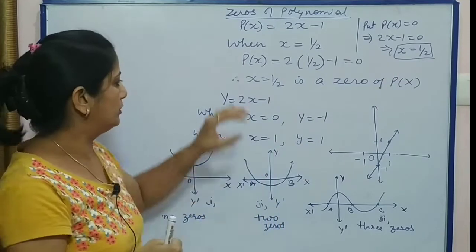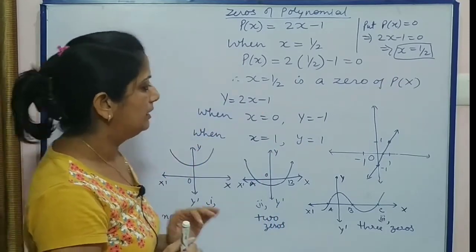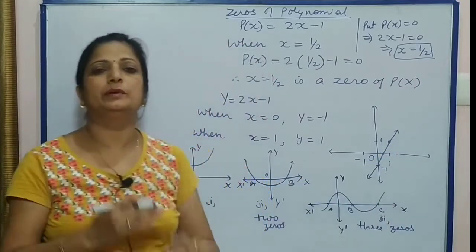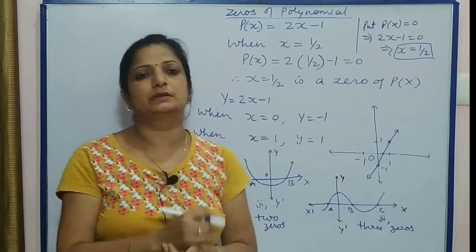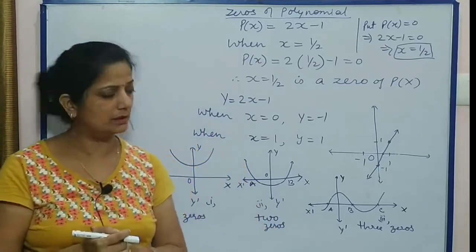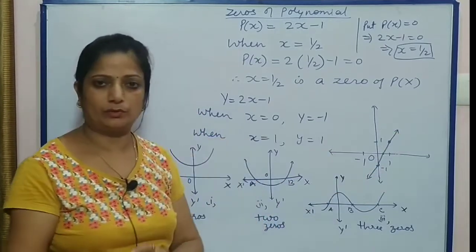When we draw the graph of this polynomial, we will get a simple line. Linear ka matlab hai ki jab hum usko graphically represent karein, toh woh humein ek line mil jaye. Yeh humein ek line draw kar di.